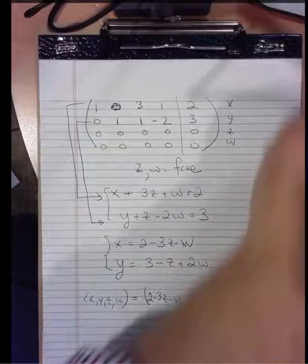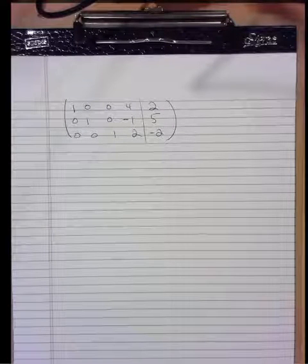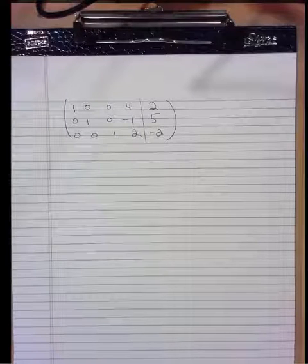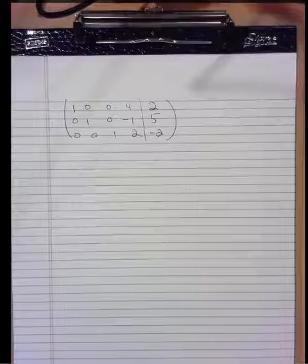One more example. Here's a third example where you can have a free parameter and an infinite number of solutions that have to be described properly. There is no row of all zeros here, but note that in this augmented coefficient matrix, it's not a square system. There's four unknowns.